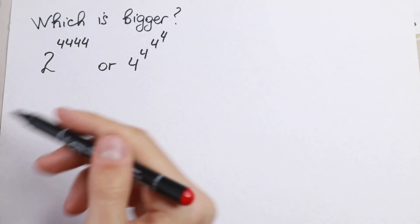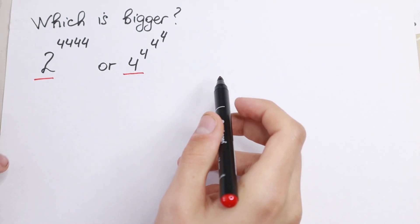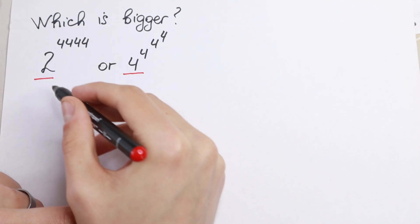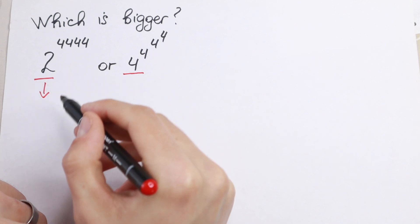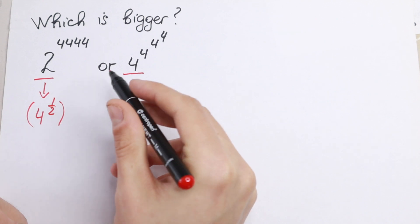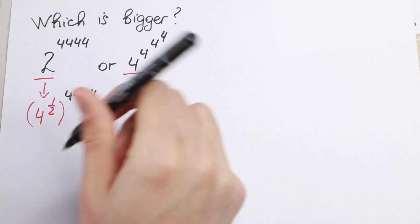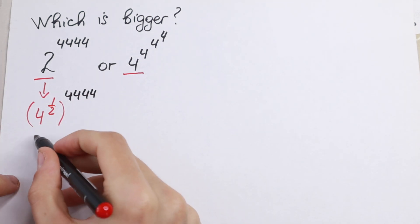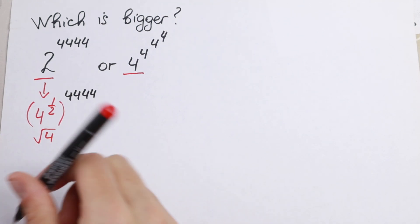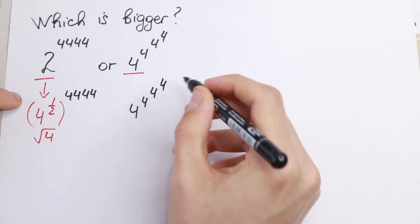First of all, I see that on the right side we have base 4 and on the left side we have base 2. It's not ideal because it's really useful to compare numbers with the same bases. So let's write 2 as 4 to the power of 1/2, all raised to the power 4^(4^4), because 4 to the power 1/2 is the square root of 4. The other number is 4 to the power 4 to the power 4, and to the power 4.